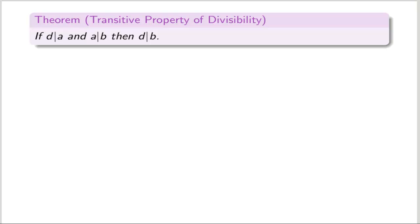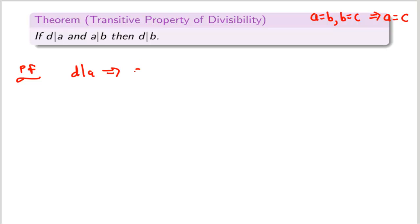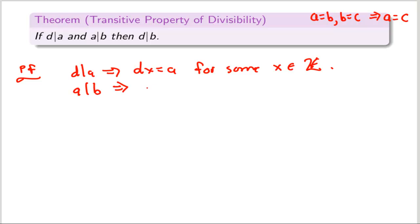Another basic divisibility property is the transitive property. Because the transitive law for equality says: if a equals b and b equals c, then a equals c. And divisibility has a very similar property: if d is a divisor of a and a is a divisor of b, then d is a divisor of b. You should pause the recording and see if you can write down a proof yourself. So d divides a means that dx equals a for some integer x.